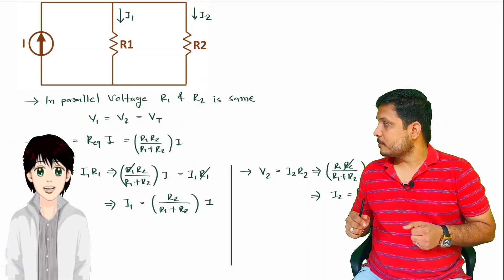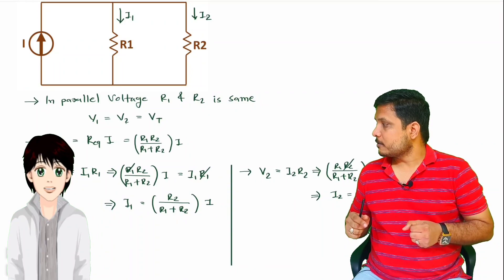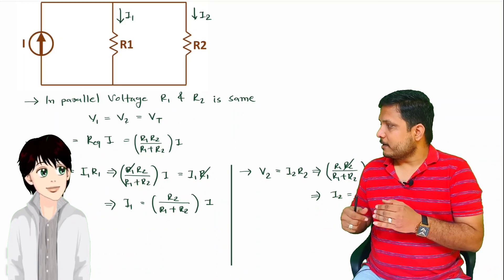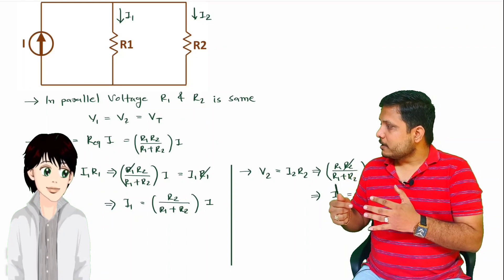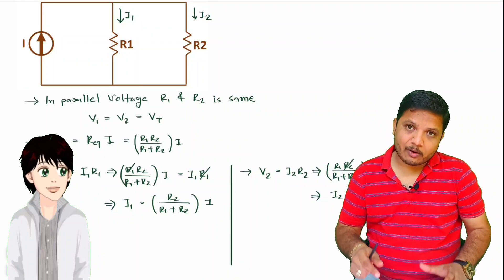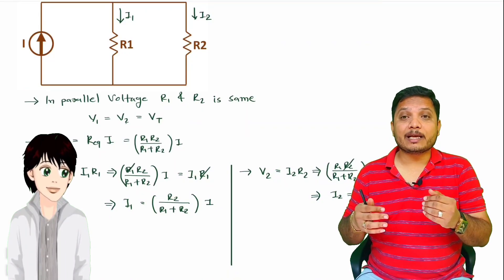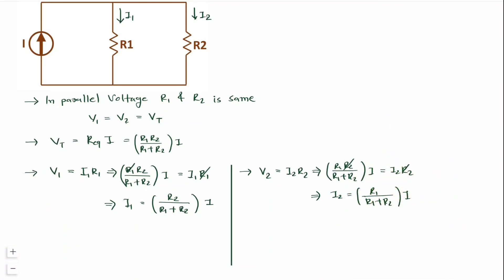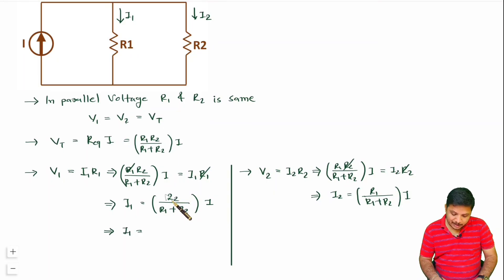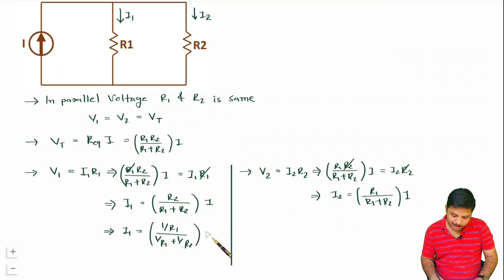A student asks: what if we have three or more resistors in parallel — can you give a generalized formula? Yes — let me derive it. If we divide numerator and denominator by R1·R2, for I1 we get 1/R1 in the numerator, and (1/R1 + 1/R2) in the denominator, times I. Similarly, I2 equals (1/R2) divided by (1/R1 + 1/R2) times I.